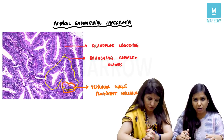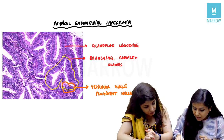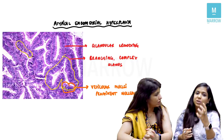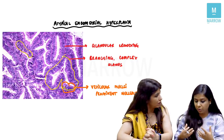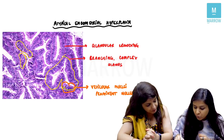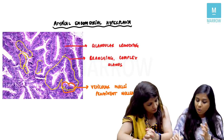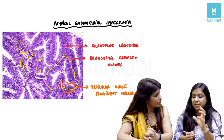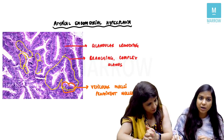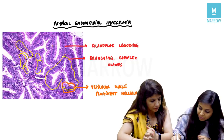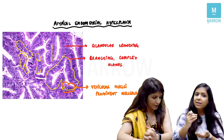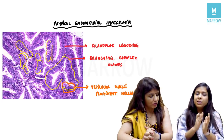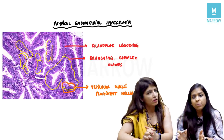The nuclei appear very blue — hyperchromatic and prominent. Another important feature from Robbins is that the axis of the nuclei is not perpendicular to the basement membrane — the cells lose their polarity, some becoming horizontal. These features differentiate atypical from typical endometrial hyperplasia. Atypical endometrial hyperplasia is also called endometrial intraepithelial carcinoma because it is a significant risk factor for endometrial carcinoma.